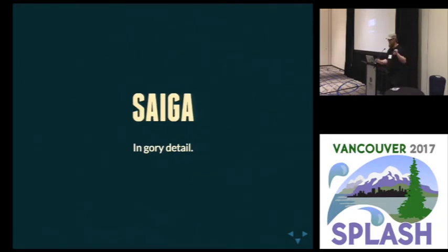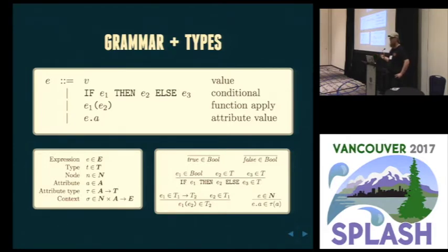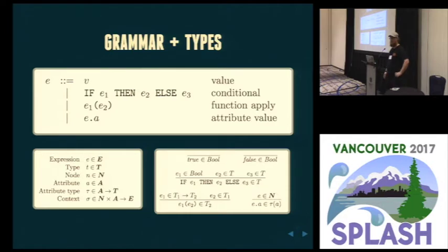So let's take a look at the details of how this system works. We've got an expression language with some very basic features: an expression can be a value, we've got conditionals, we've got function application. The types of the values we leave outside the scope — we just assume there are some types we can use, like Booleans, integers, lists. In our mechanization, we just use Coq's type system. Conditionals are just there for short-cutting, and application is delegated, lifted from the system below.